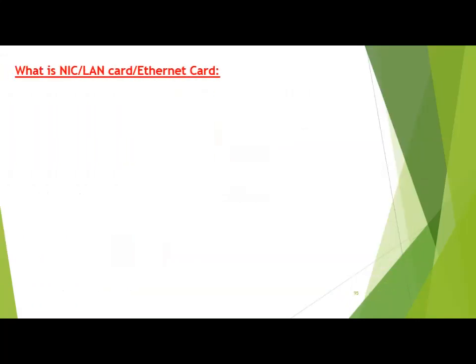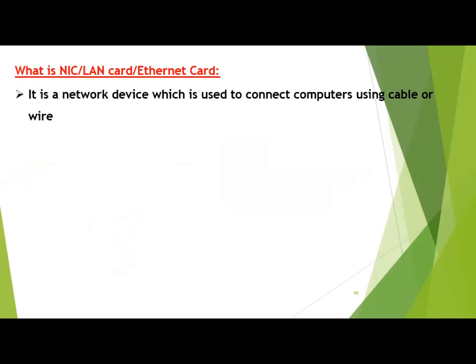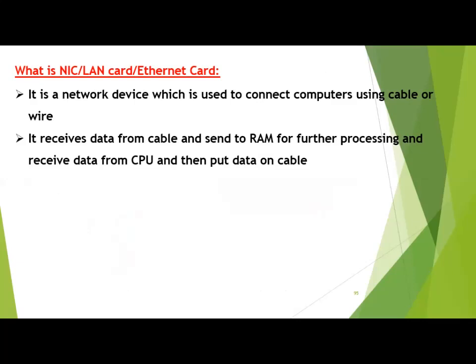What is a NIC, LAN card, or Ethernet card? It has different names. You must have seen it at the back side of your computer. It is a network device used to connect a computer using a cable or wire. The purpose of the LAN card is to receive data from the cable and put data on the cable. It receives data from the cable and sends it to RAM for further processing, and receives data from the CPU and puts it on the cable.